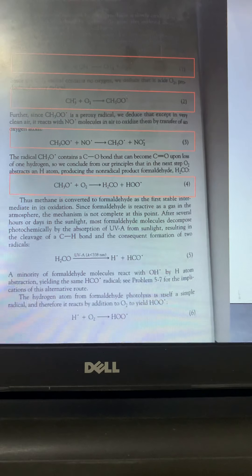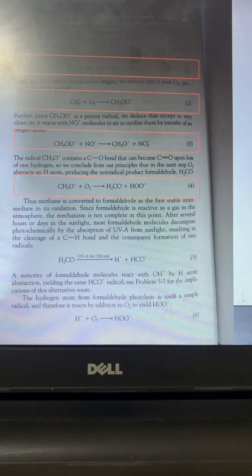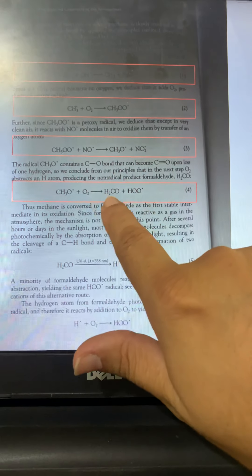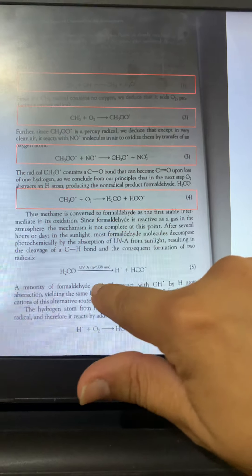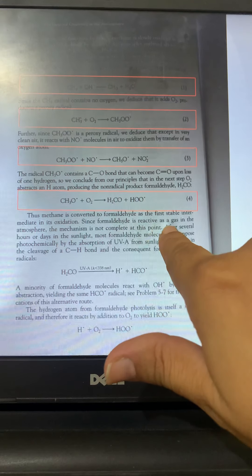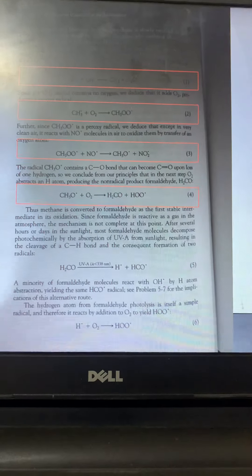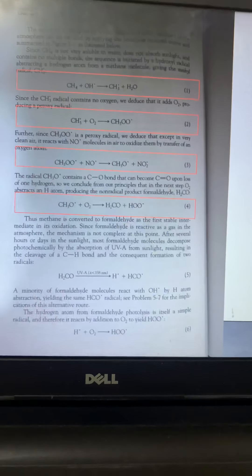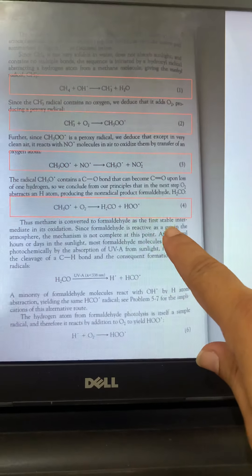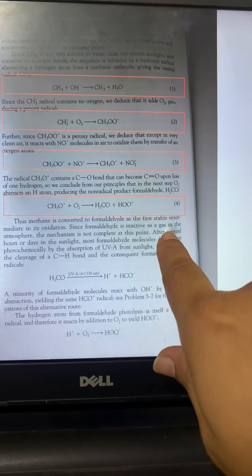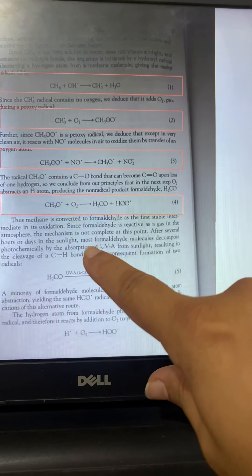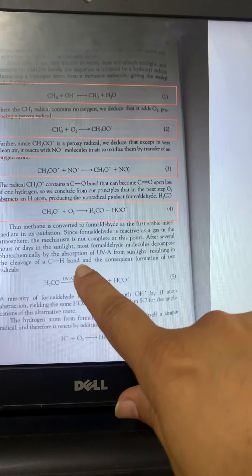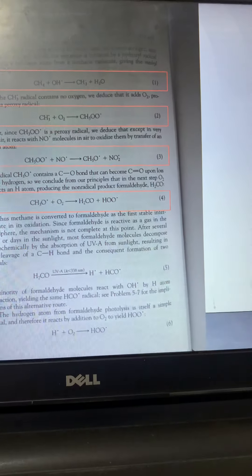So this methane is converted to formaldehyde as a first stable intermediate during its oxidation. This is the first stable molecule during its oxidation. Since formaldehyde is reactive as a gas in the atmosphere, the mechanism is not complete at this point. After several hours or days in the sunlight, most formaldehyde molecules decompose photochemically by the absorption of ultraviolet radiations from sunlight.